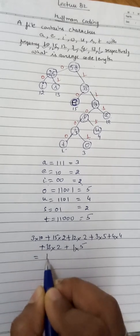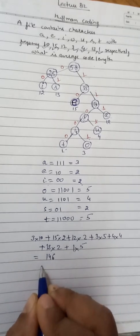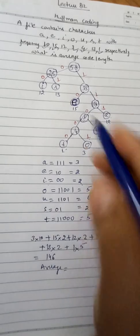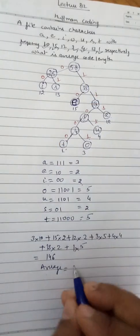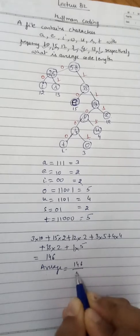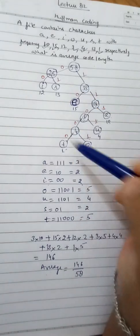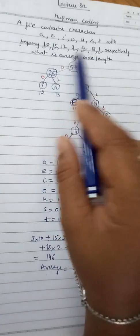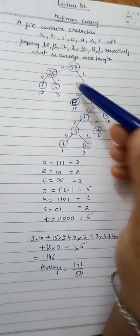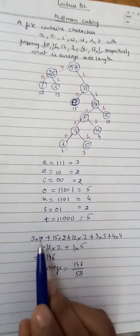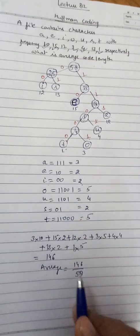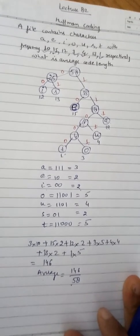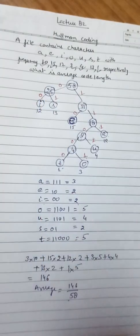Adding all of these together gives a total of 146. The total frequency is 58. Therefore, the average code length is 146 divided by 58. This is the average code length for these characters using Huffman coding.